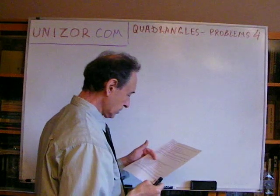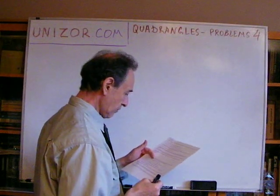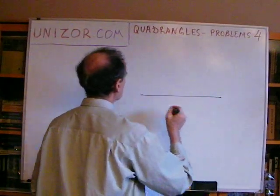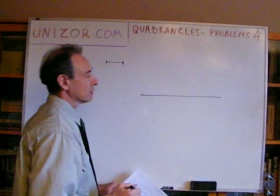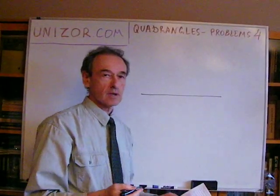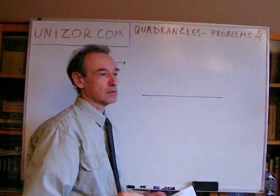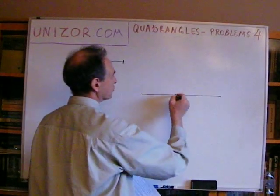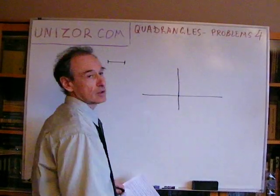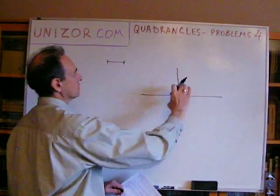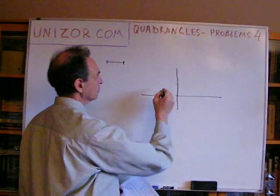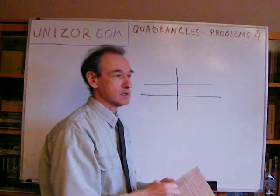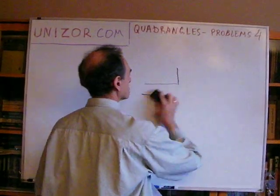Construct a straight line parallel to a given straight line and at a given distance from it. So you have a straight line and some segment representing the required distance. You pick any point, draw a perpendicular, cut the given length on it, and then draw another perpendicular line through that point. How to draw a perpendicular through a line, you're supposed to know from previous lectures — so that's easy.